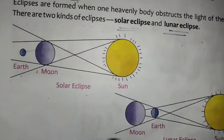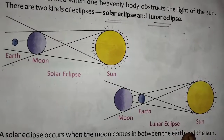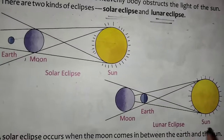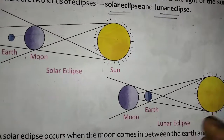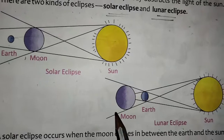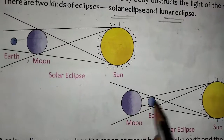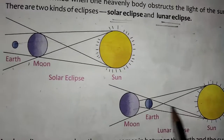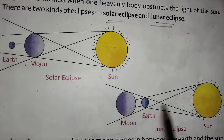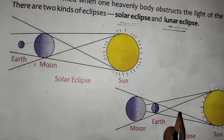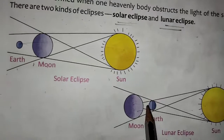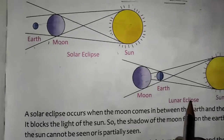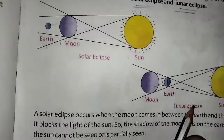And next, lunar eclipse. Lunar eclipse means: the moon and sun are in one line only — a straight line. In between them, when the earth comes, that is when we get the lunar eclipse.